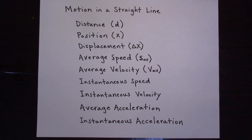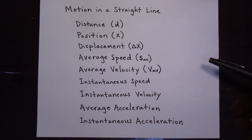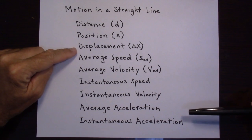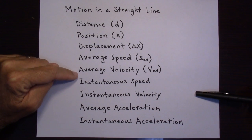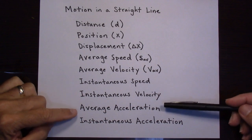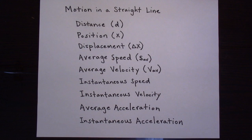Welcome. In this video, we're going to be looking at describing the motion of an object that's moving in a straight line. We're going to talk about each one of these topics: distance, position, displacement, average speed, average velocity, instantaneous speed, instantaneous velocity, average acceleration, and instantaneous acceleration.